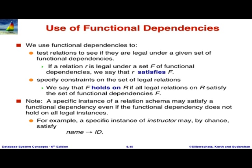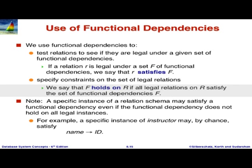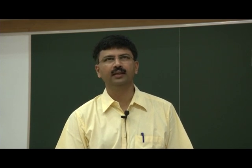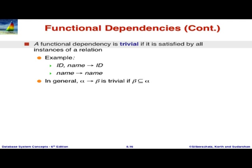How do we use functional dependencies? We say a particular relation is legal if it satisfies functional dependencies. We use the terminology that a set of functional dependencies F holds on R if all legal relations on that schema satisfy those dependencies. For example, name functionally determining ID may hold on an instance, but you cannot guarantee it — you may have two people with the same name.